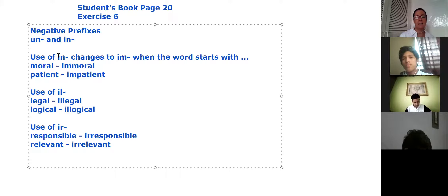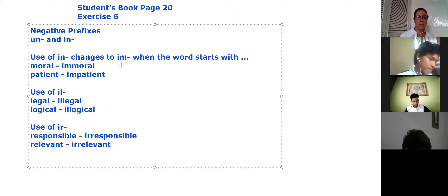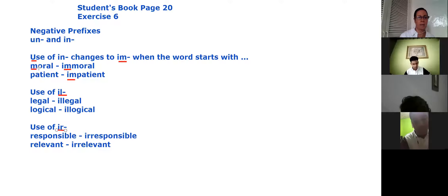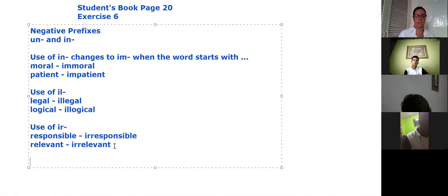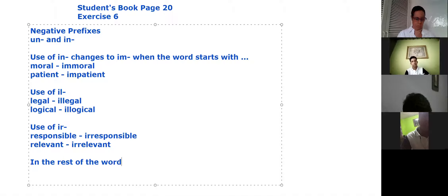The I-N changes to I-M only when you have an M or a P. It changes to I-L when the word starts with L. And when it starts with an R, you change it to I-R. In all the other cases, we use I-N, for example capable becomes incapable.